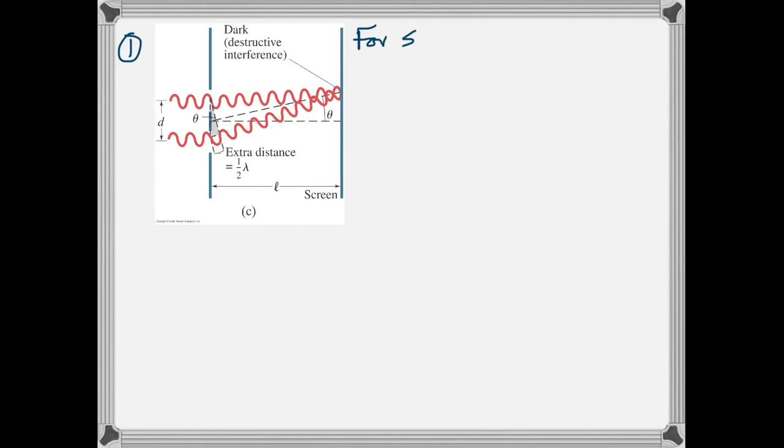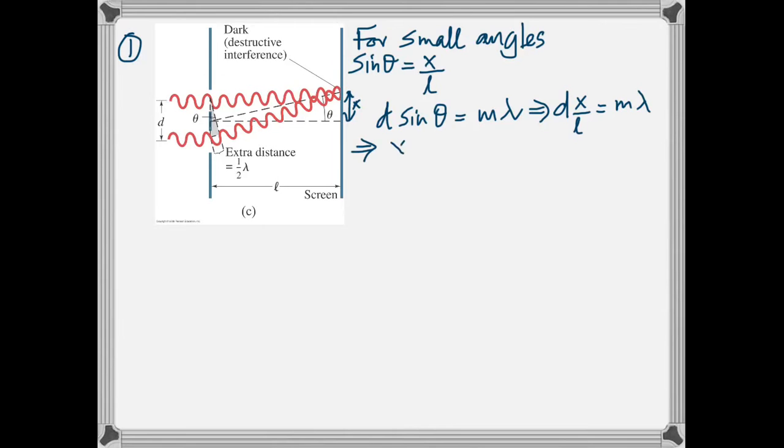Question 1. Remember that's the diagram, and for small angles sin theta equal to tan theta equal to theta. If you call it as x, then sin theta is x by L, where L is the distance between the slits and the screen. And you know D sin theta equal to M lambda.